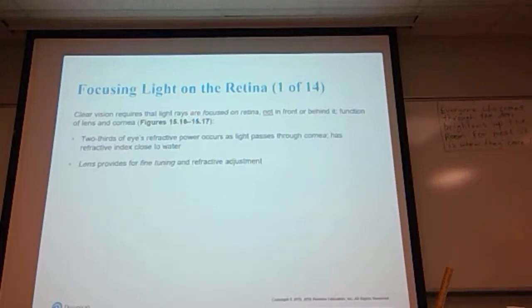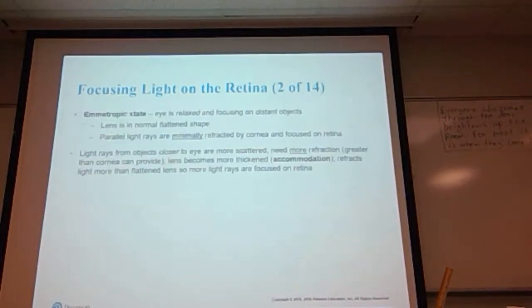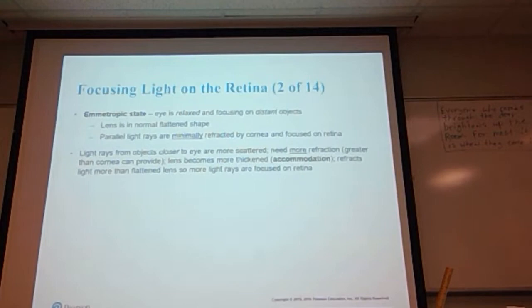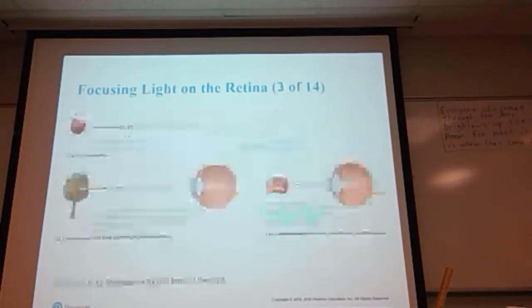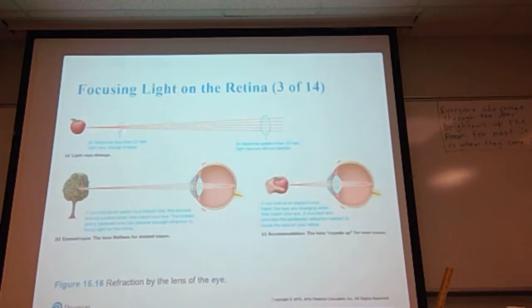The emmetropic state occurs when the eye is relaxed and focused on distant objects — the lens is in its normal flattened shape. Parallel light rays are minimally refracted by the cornea and focused on the retina. Light rays from objects closer to the eye are more scattered, therefore there is more refraction greater than the cornea can provide, and the lens becomes more thickened — this is called accommodation — which refracts light more than flattened lenses so more light rays are focused on the retina.